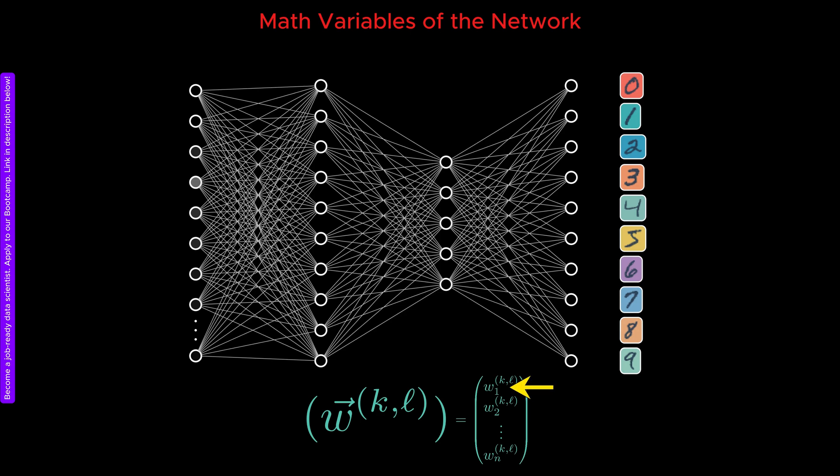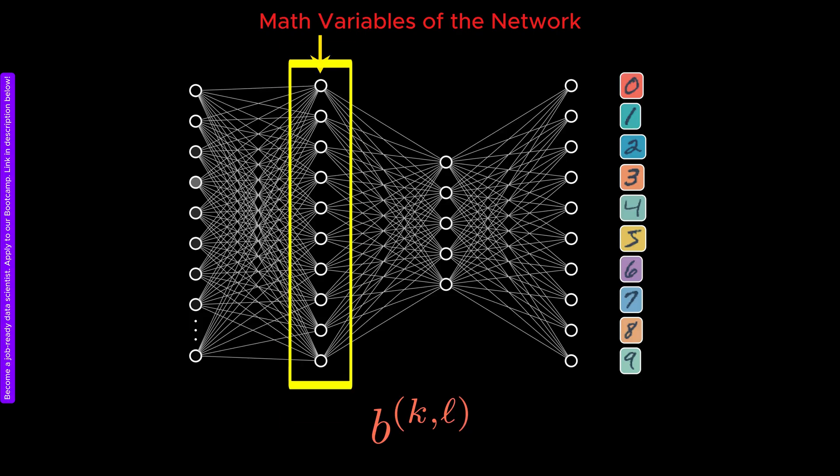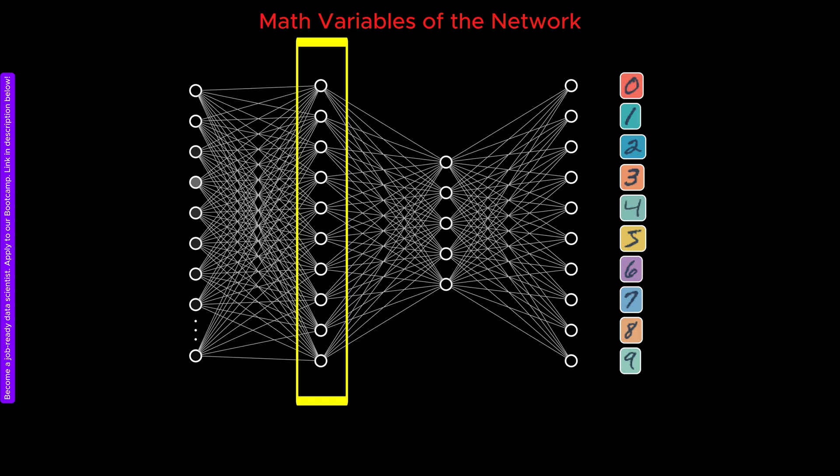We represent the edges in the neural network that feed into neuron k in layer L as a vector of weights. The first component of this vector represents the edge coming from the first neuron in the previous layer. The second component connects the second neuron in the previous layer to this neuron, and so on. Each neuron also has a free parameter called the bias, which we label b for neuron k in layer L. The state of the neurons in each layer is represented by a vector. In this vector, the first component refers to the first neuron, the second component to the second neuron, and so on.